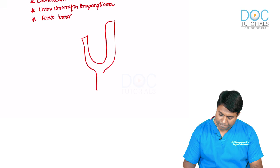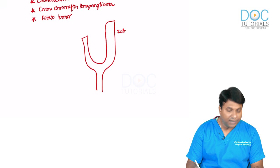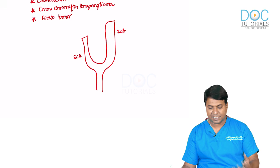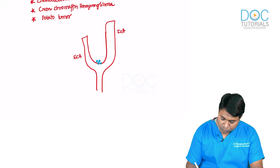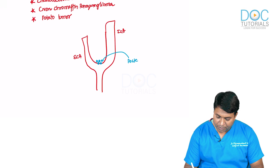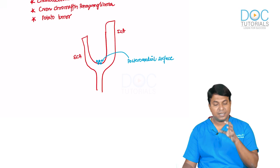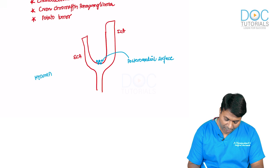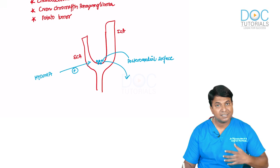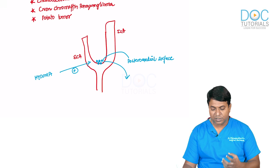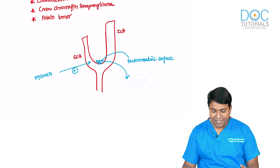The carotid body is located at the bifurcation of the common carotid artery — internal carotid artery goes inside with no branches in the neck, and the external carotid artery has all its branches. The carotid bodies are small chemoreceptors seen on the posteromedial surface of the common carotid artery bifurcation. They are stimulated by hypoxia, causing hyperventilation so the patient takes in more oxygen.